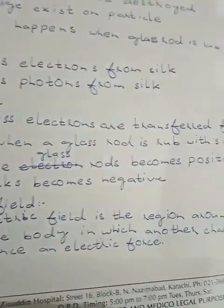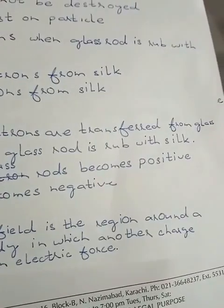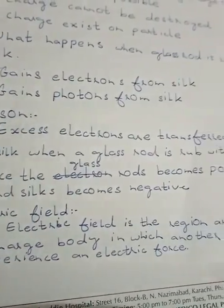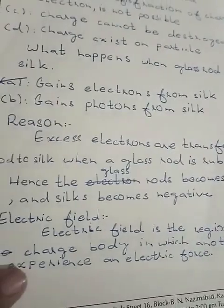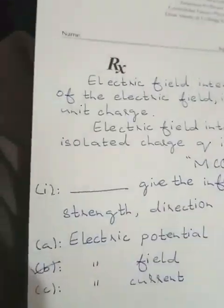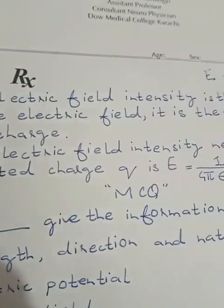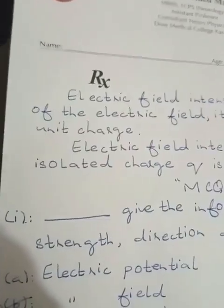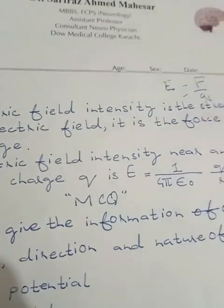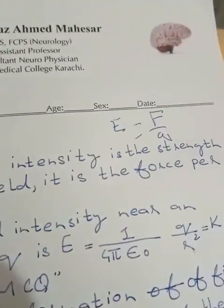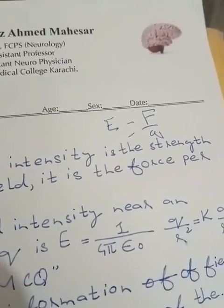Electric field is the region around a charged body in which another charge experiences an electric force. Electric field intensity is the strength of the electric field. It is the force per unit charge.